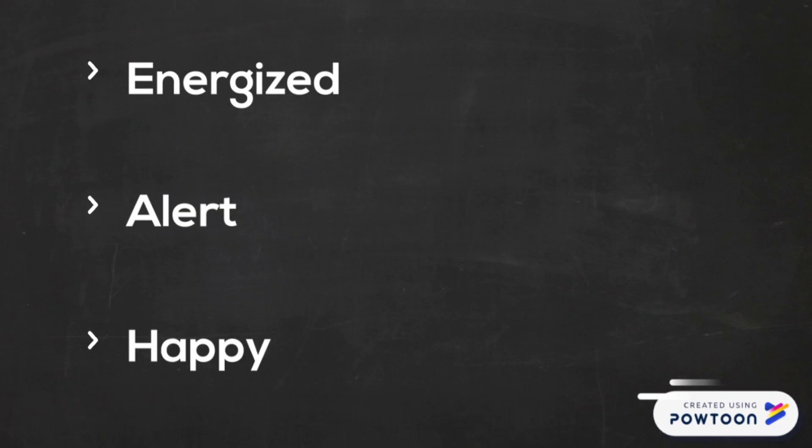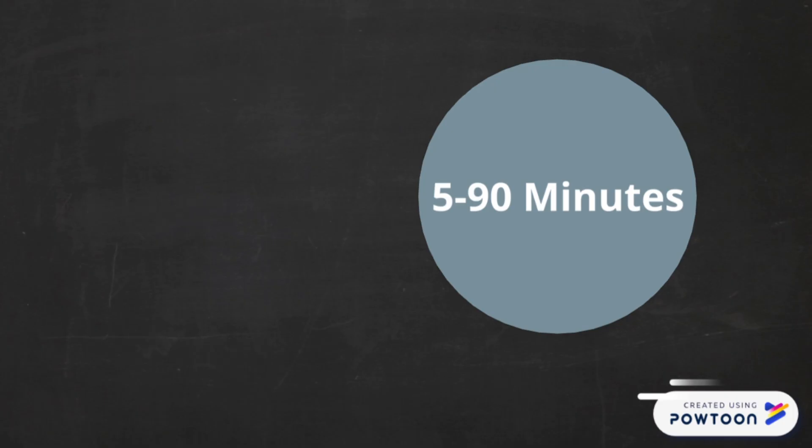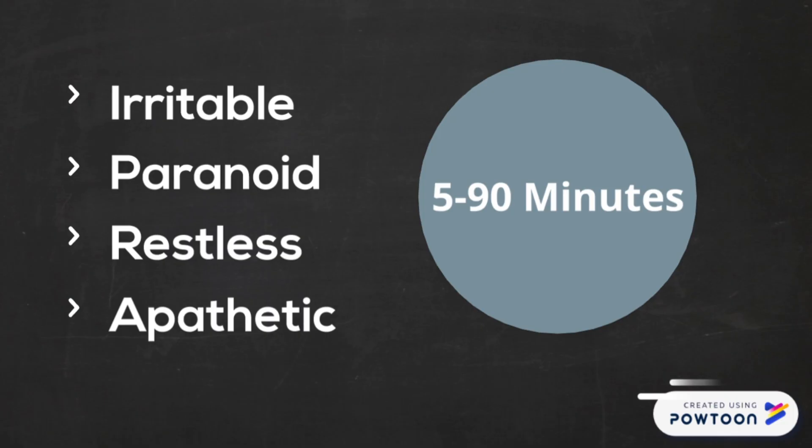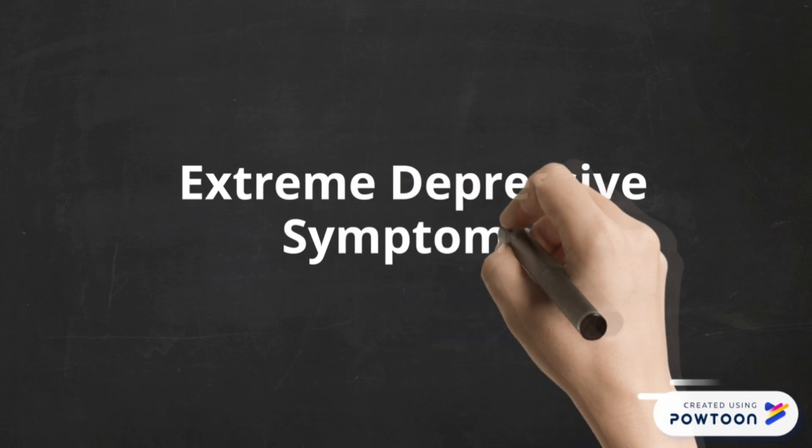Dopamine then makes you feel energized, alert, and happy. However, you only feel these good feelings for about 5 to 90 minutes until your dopamine levels start to decrease, at which point you feel irritable, paranoid, restless, and apathetic. You then start to experience extreme depressive symptoms.